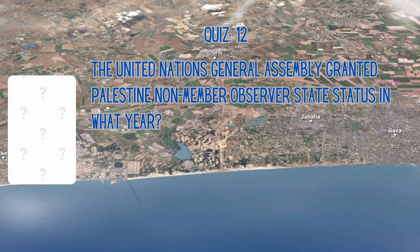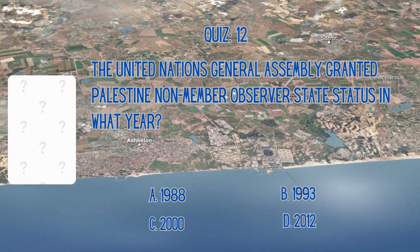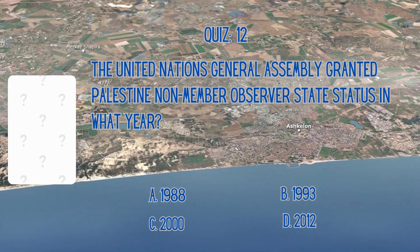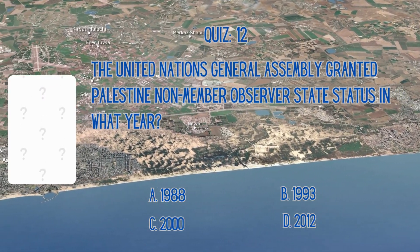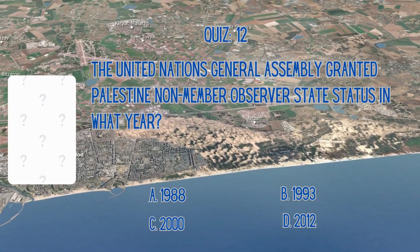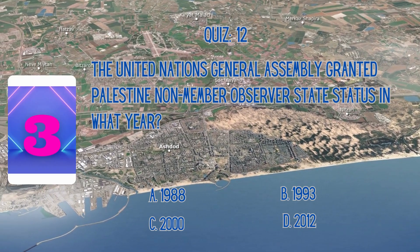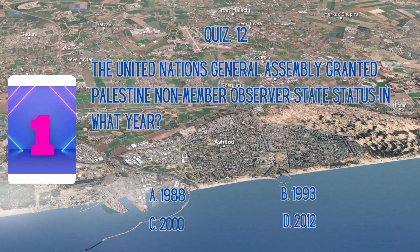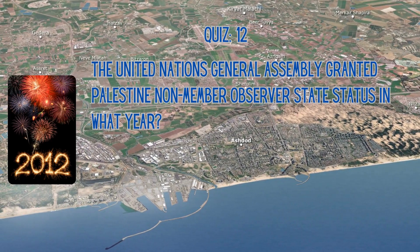The United Nations General Assembly granted Palestine non-member observer state status in what year? Is it A. 1988, B. 1993, C. 2000, or D. 2012? The correct answer is 2012.